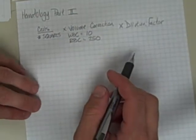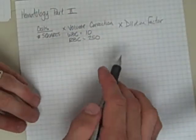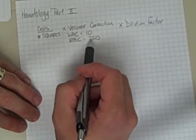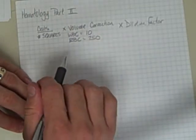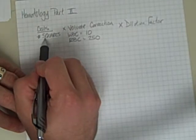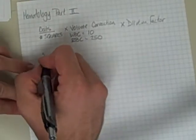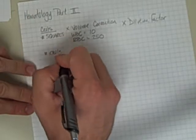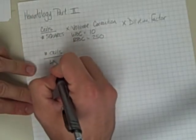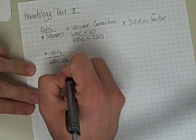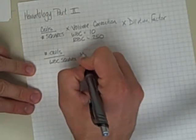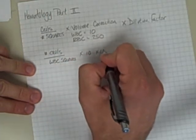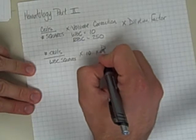So the way I do it is to kind of get away from these volume correction factors and memorize just things in terms of white blood cell squares. So my equation looks similar—the one that I use rather. It's again number of cells in white blood cell squares, and then you just do times 10 times your dilution factor.